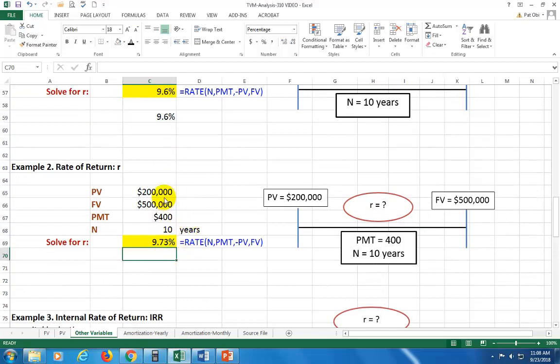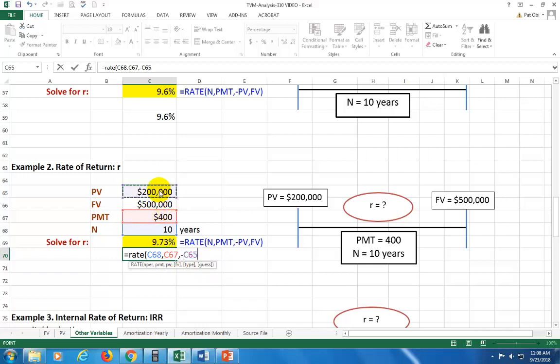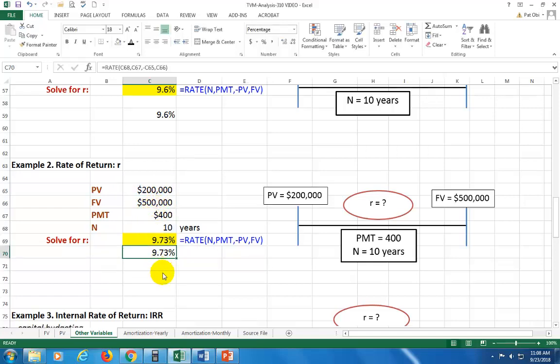And then, for this case where you do have an annuity payment, additionally, of 400 bucks, now that means when you type rate, open parenthesis, reference the number of periods, comma, and now you're going to have to reference your payments, because you have it, comma. And then with the negative, you reference your PV, comma, and then your future value, and then you close. And that's what the rate of return is, 9.73%.